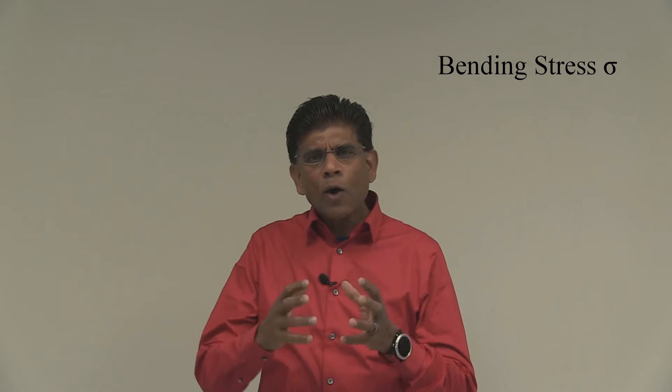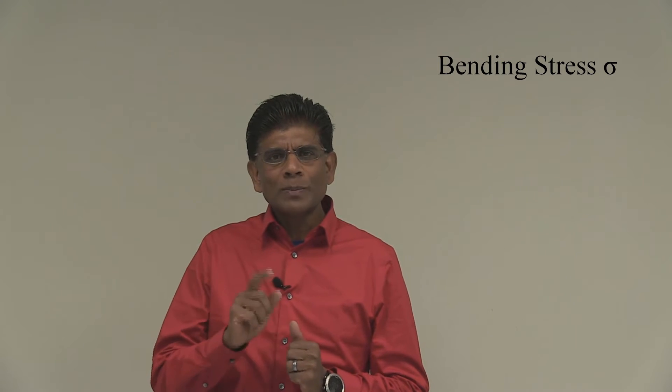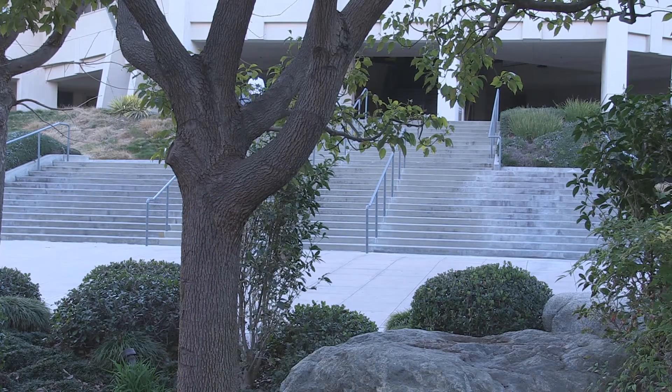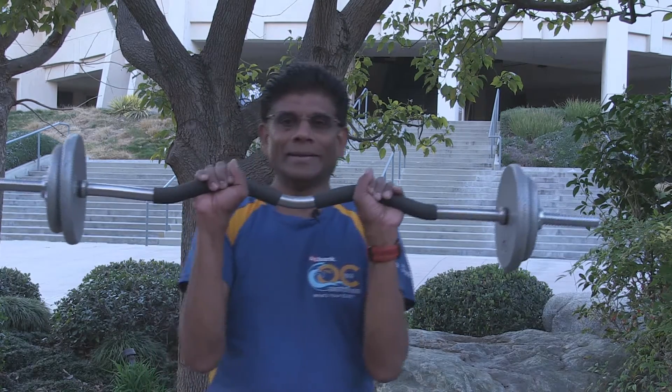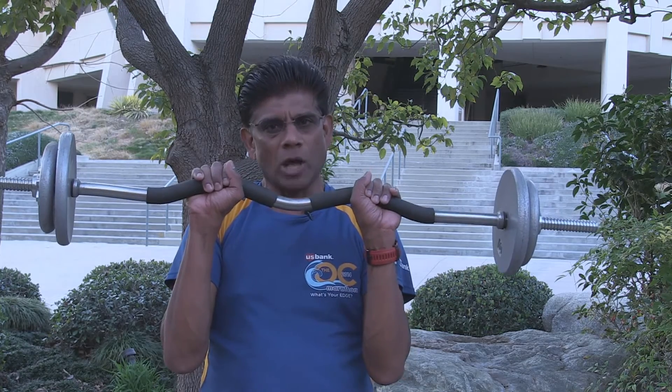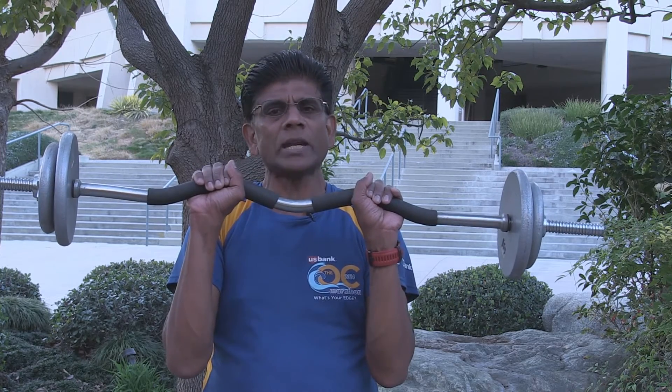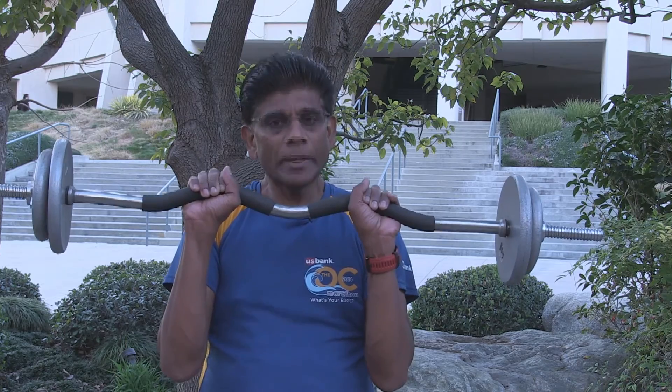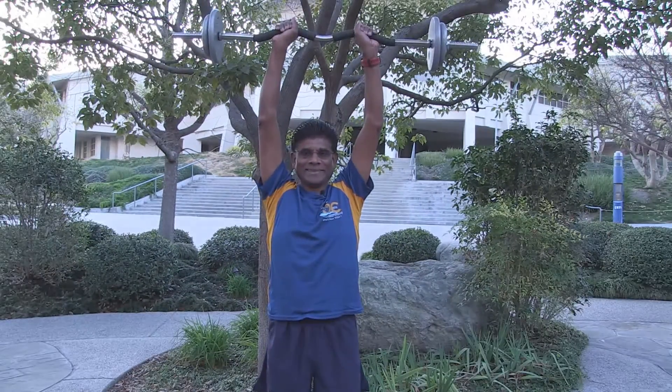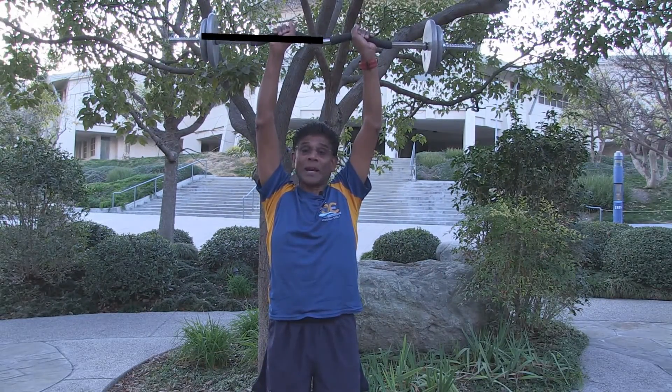In many applications you can visually see bending. However, it is not always intuitive and visual. To make sure you can see how bending occurs, I want to show you a simple example outside. Let us consider this weight lifting bar. This rod is 36 inches long and it has 17.5 pounds on each side. Let me lift this bar. Now let us draw the free body diagram of this rod.